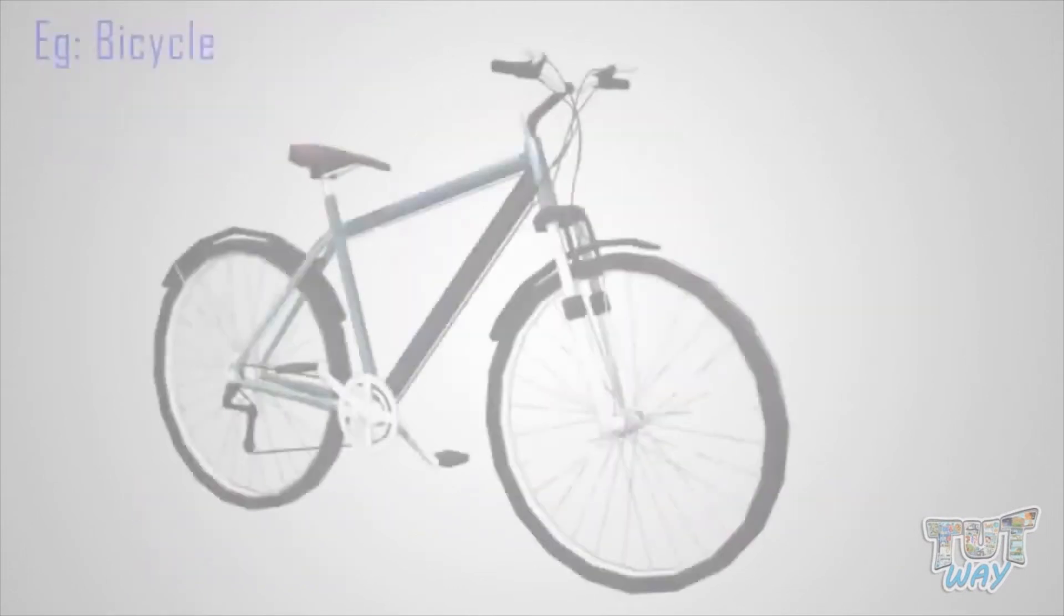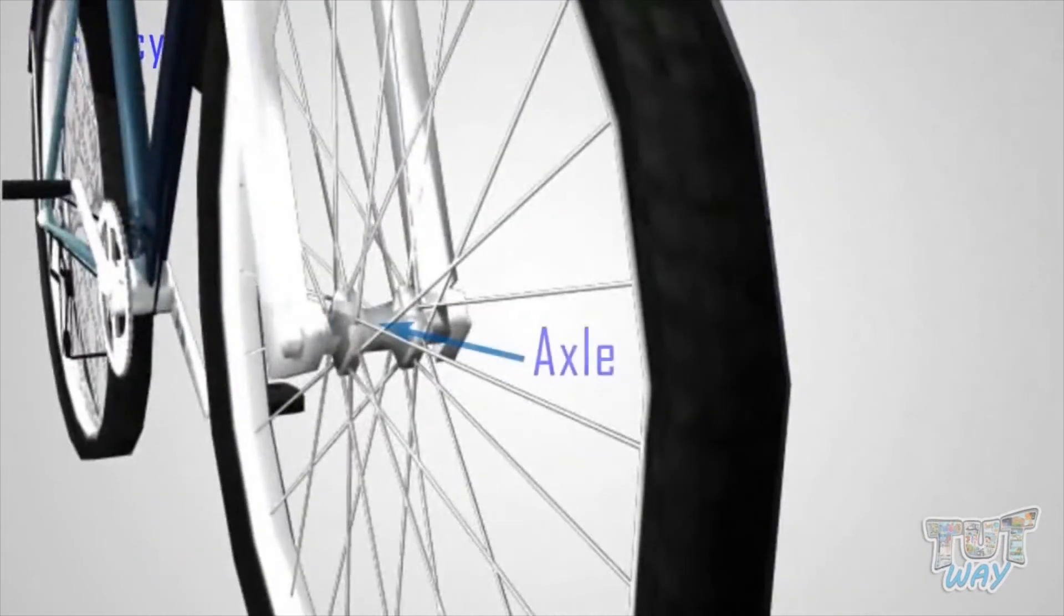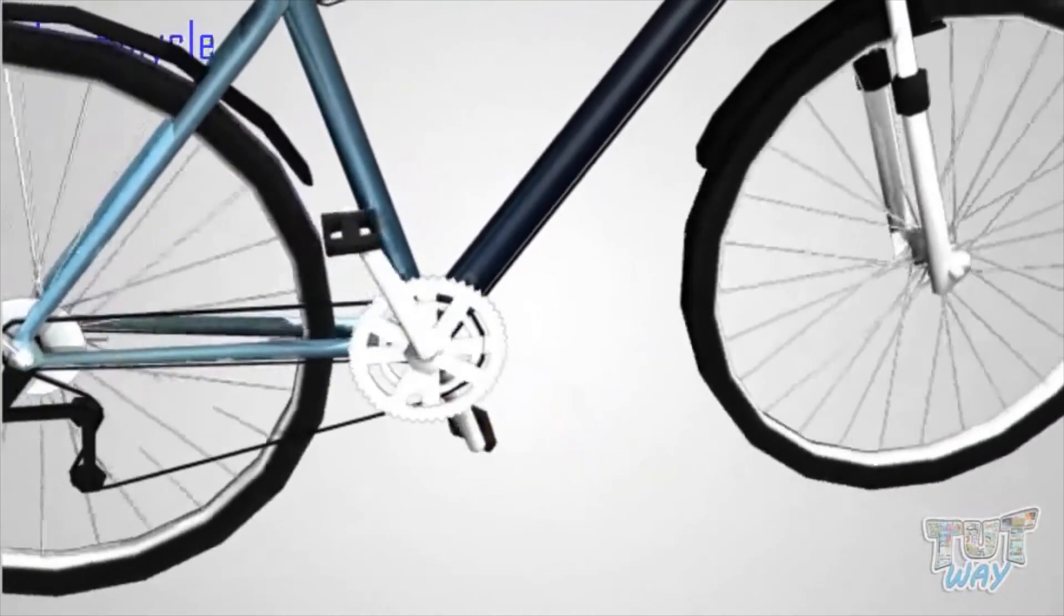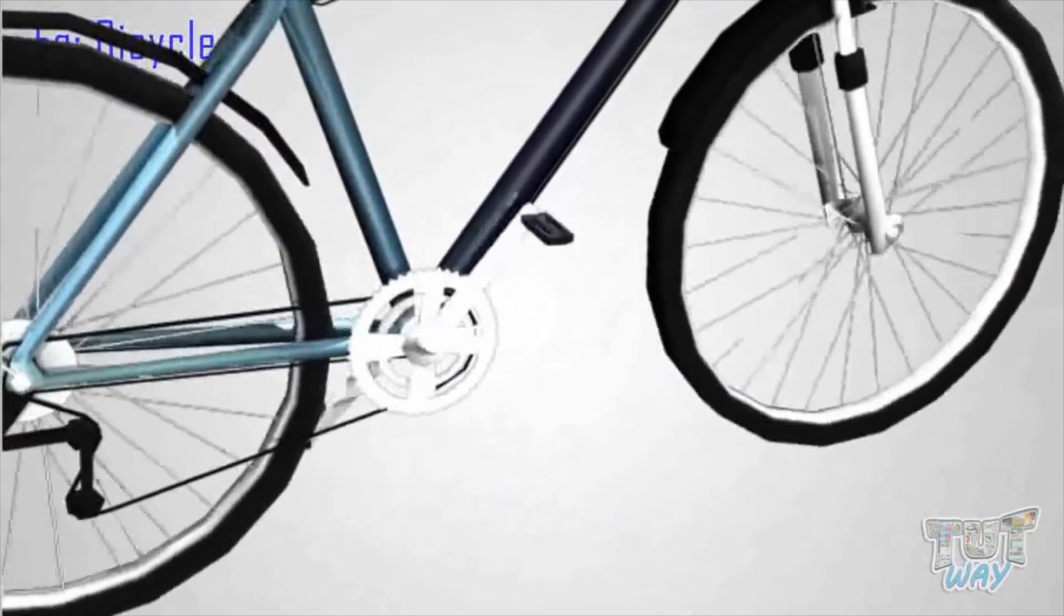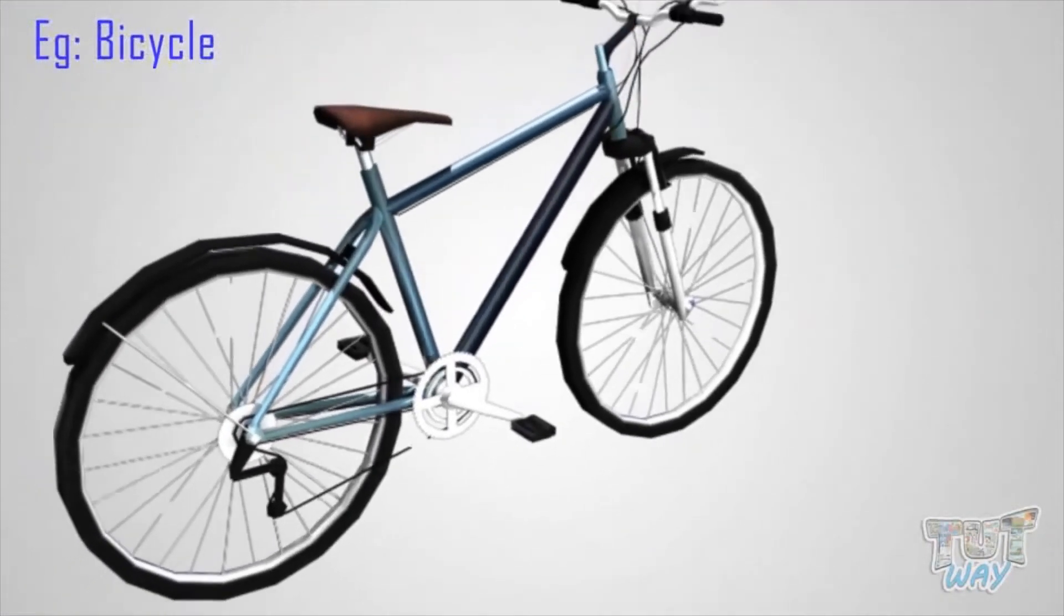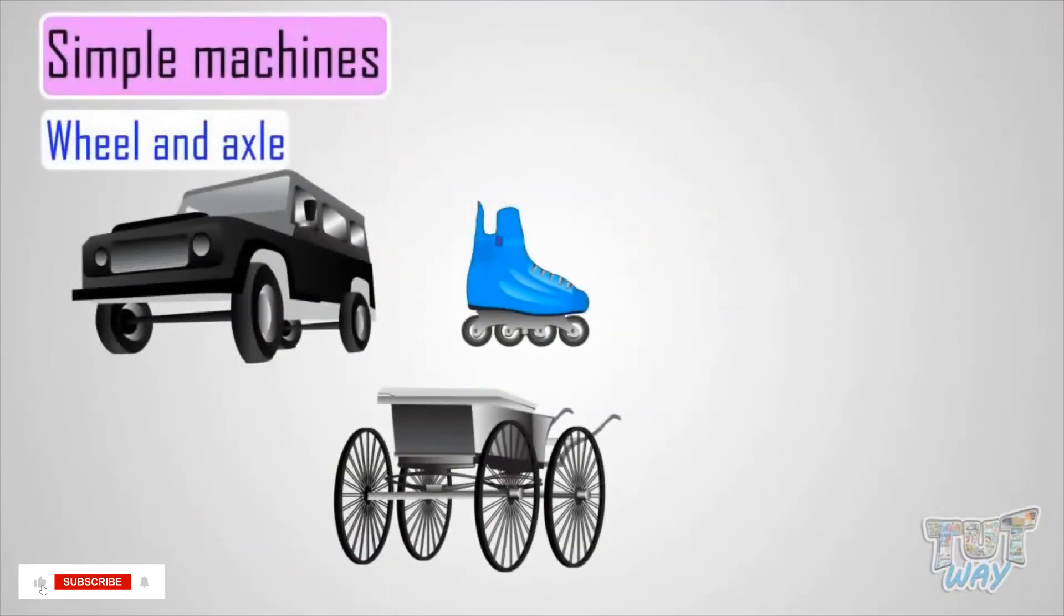Examples? Bicycle. Bicycle wheels are attached to the axle and we move the axle with pedals. And the faster we move the axle, the faster the wheels move the vehicle.